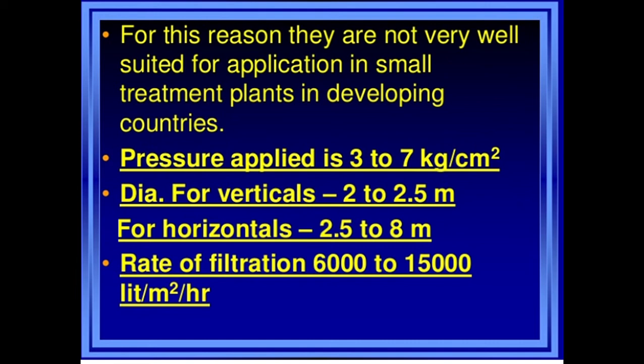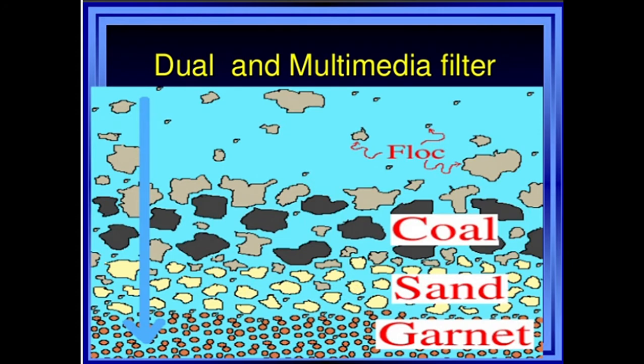The applications of pressure filters are as follows: these filters are not suitable for public water supply schemes, but they can be used for water colonies, swimming pools, industrial plants, bus stations, or railway stations. They are not very efficient for removing bacteria or turbidity as compared to the rapid sand filter.